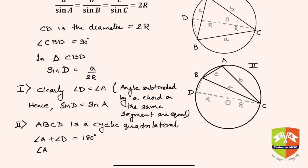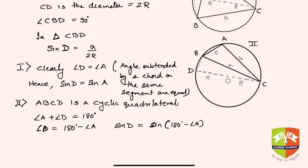Therefore angle D is equal to 180 degrees minus angle A. Therefore sine D will be equal to sine of 180 degrees minus angle A. That means sine 180 minus theta is sine theta, so hence it is sine A.